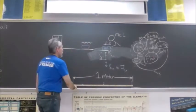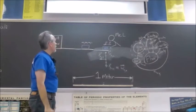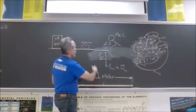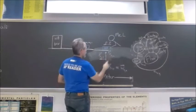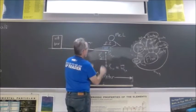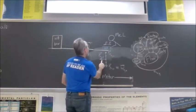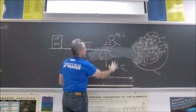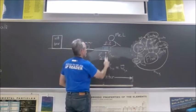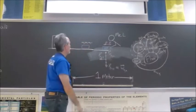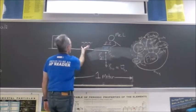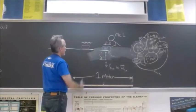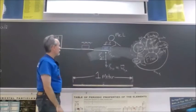Since it's moving at constant velocity, the forces must be balanced. Over here when the forces were unbalanced, we had an acceleration. But here we don't have an acceleration — we have constant velocity — so that must mean the forces are balanced.